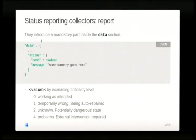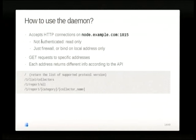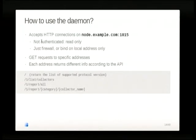Status reporting are the data collectors that report on the status of the cluster, while others just give you values but don't have a particular measure of how broken things are. We don't know how broken it is if your disk is getting full, but we definitely know that if the master is not responsive, it's broken. Just query the HTTP daemon — it's not authenticated, it's read-only. Just put it on a private interface. Disable it if you don't need it, but try not to leave it open to the world. You can check which collectors you have, then see either all collectors or query one collector specifically, and just point it at all nodes, gather information, and do your own number crunching.